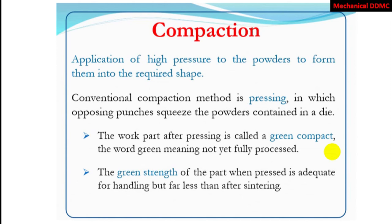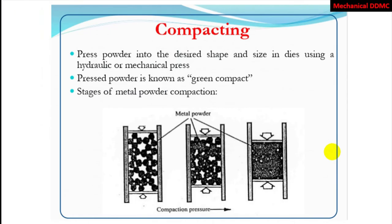To increase the strength of the product after compaction, we use the sintering process. Here you can see the compacting process: pressure can be applied from top, bottom, or both sides, and the particles become closer under high pressure, forming one shape or one product. We can change the die shape so that the product after compaction has the final required size. The base powder product is known as the green compact. This is metal powder compaction.